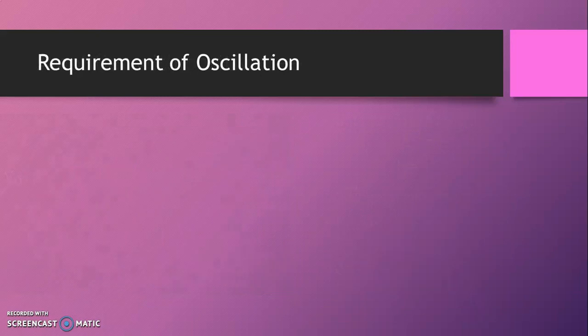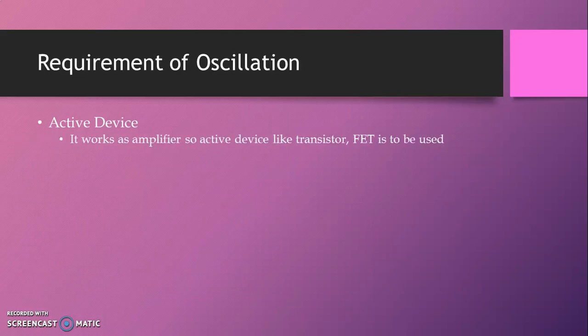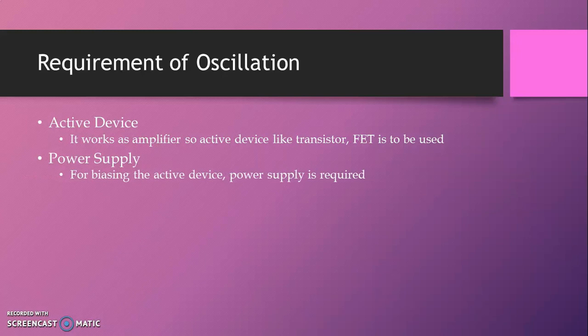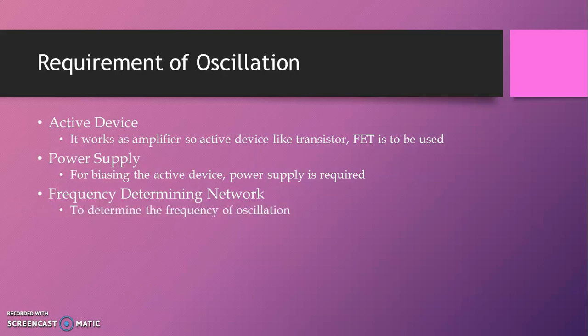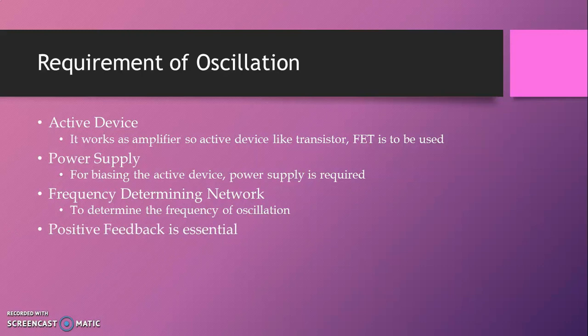Now let us see the requirements of an oscillator. First, an active device — we know that it works as an amplifier, so an active device like a transistor or FET is required. Second, a power supply — we do not require any input signal, but for the biasing of the active device, a power supply is required. Third, a frequency determining network — we have passive components like L and C that decide the frequency, so a network is required to determine the frequency of oscillations.